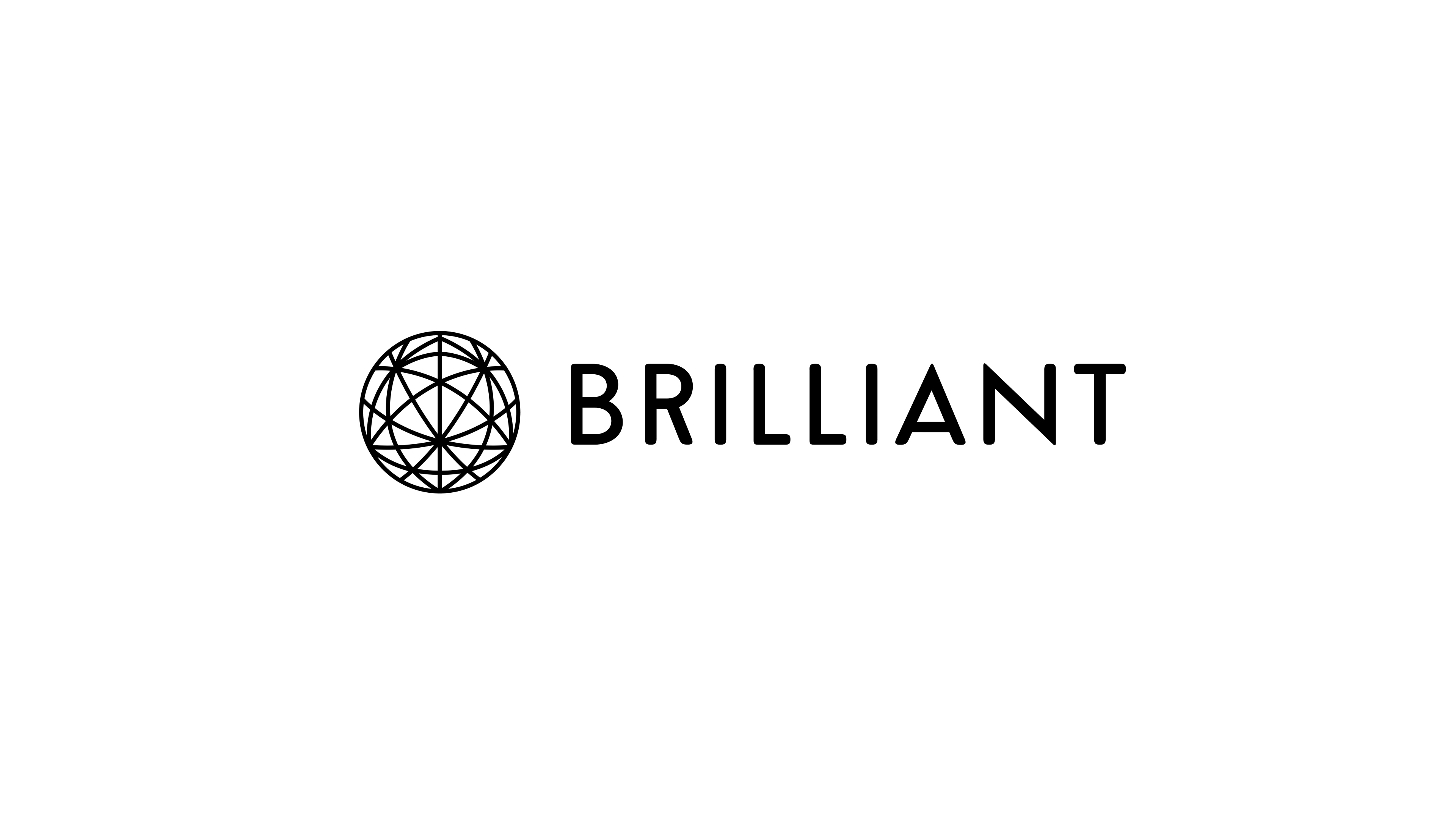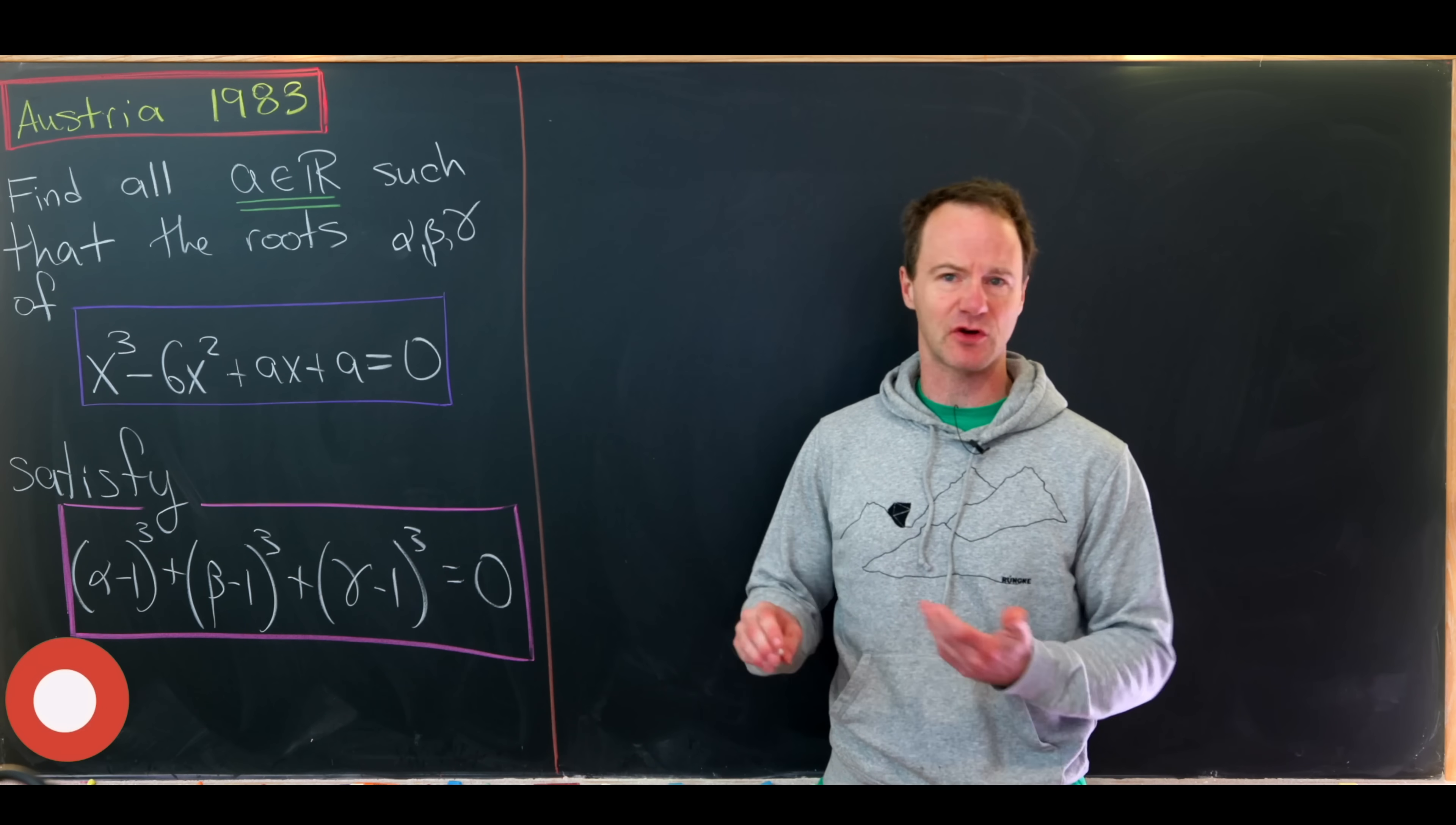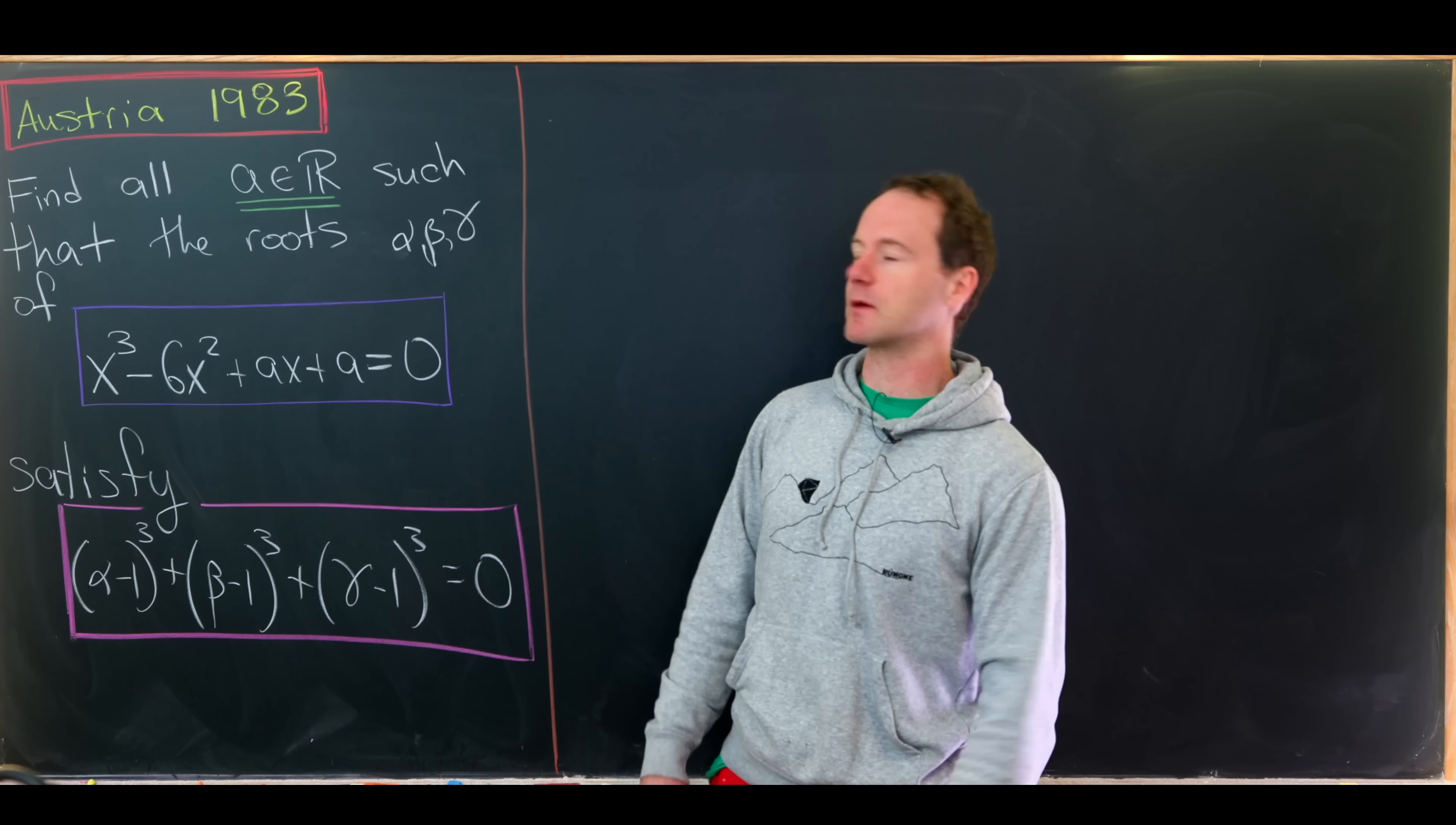Today's video is made possible by Brilliant.org. Today I've got this nice algebra type problem that comes from a math Olympiad in Austria from 1983. By looking at the demographics of the channel, I'd wager that most of you have not yet been born in 1983. Maybe post in the comments which side of 1983 your birth lies on. So let's look at our problem.